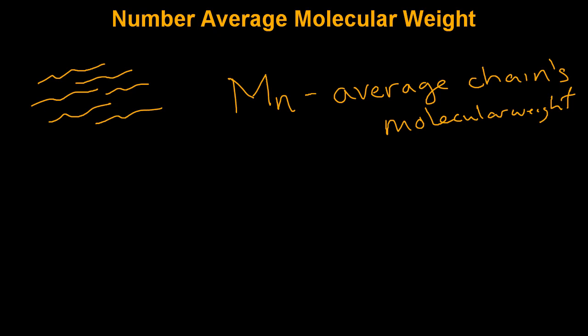Not only does this give you information about the size of the chains within the sample, it might also give you information about the degree of polymerization or the conversion. Experimentally, this value can be determined by a number of different methods including GPC (gel permeation chromatography), NMR, and osmotic pressure.